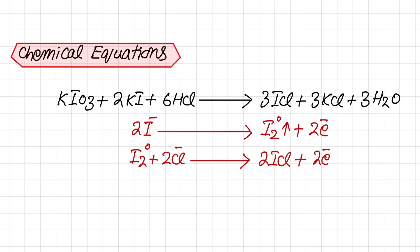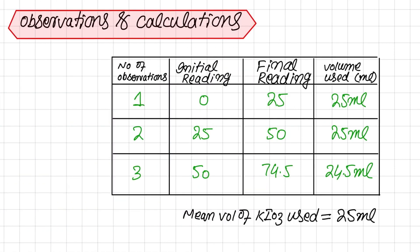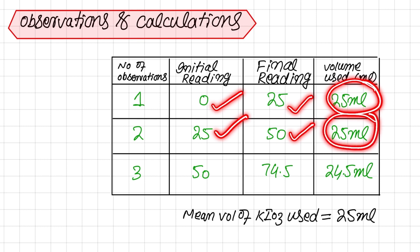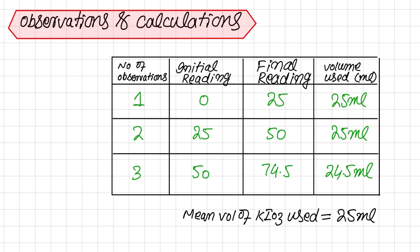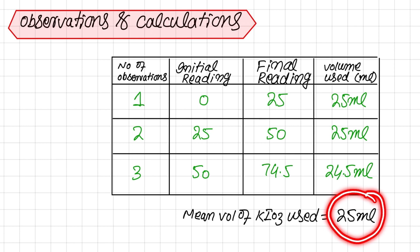Three concordant readings were taken. The first reading started from 0 and ended at 25 mL, giving a volume of 25 mL of potassium iodate. The second reading started from 25 and ended at 50 mL, again 25 mL. The third reading started from 50 and ended at 74.5 mL, giving 24.5 mL. Taking the average, approximately 25 mL of potassium iodate was used to reach the end point where the organic layer became colorless and the aqueous layer turned pale yellow.